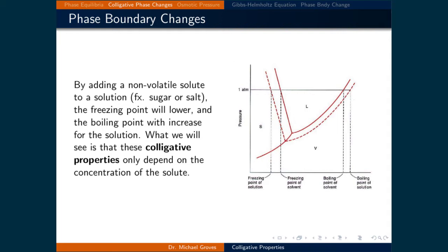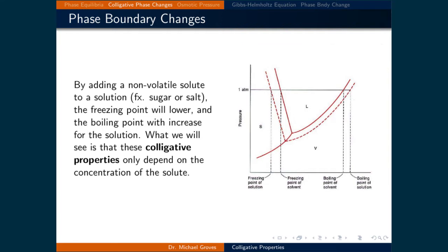For a given pressure, this shifts the freezing point to lower temperatures and the boiling point to higher temperatures. What we will see is that these colligative properties do not depend on the type of solute, but only on the concentration of this solute.